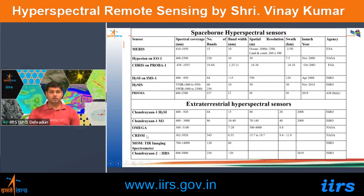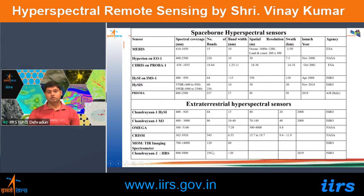Extraterrestrial hyperspectral sensors include Chandrayaan-1 HySI, Chandrayaan-1 Moon Mineralogical Mapper (M3), OMEGA and CRISM from Mars Reconnaissance Orbiter (MRO), and MOM's Thermal Infrared Imaging Spectrometer. Chandrayaan-2 carries the Imaging Infrared Spectroradiometer (IIRS). These sensors use wavelength ranges like 800–5000 nm with 256 spectral bands and less than 20 nm spectral resolution.